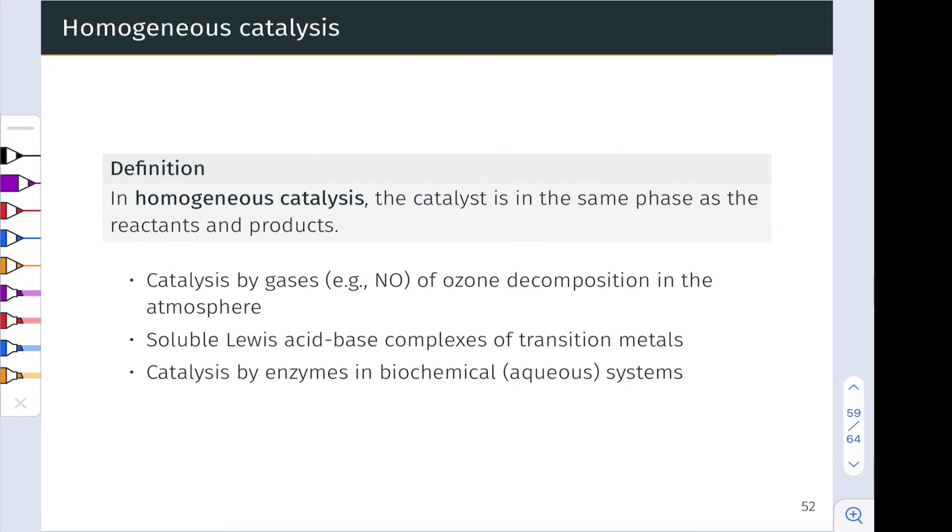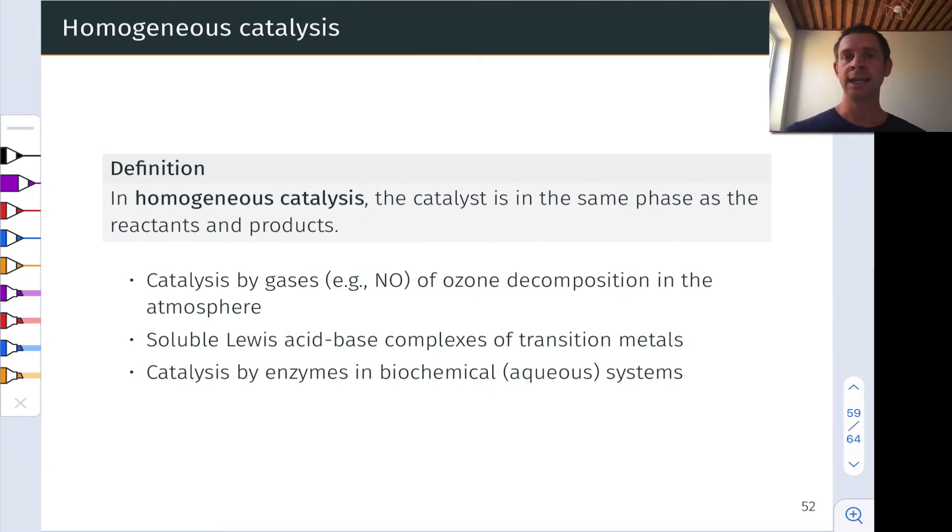There are two types of catalysis that differ in the nature of the reaction system. And the first, and probably the more common and more easy to understand, is known as homogeneous catalysis. And in this mode of catalysis, the catalyst is in the same phase as the reactants and products. And typically, this is either the aqueous or dissolved phase or the gas phase. And so, for example, catalysis by gases of ozone decomposition in the atmosphere, where a gas is catalyzing a reaction of a gas to produce gases.